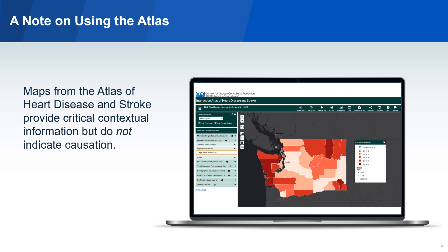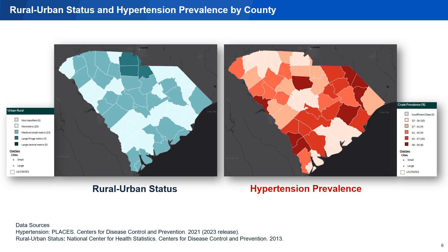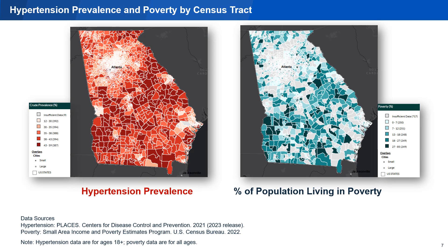This context informs hypertension management decisions that are tailored to the needs of each community. Now, let's start to contextualize hypertension prevalence using additional maps. Here we see maps of rural-urban status and hypertension prevalence. The most rural areas are light teal and the most urban areas are dark teal. In this example, it appears that counties with the highest prevalence of hypertension are often in rural areas.